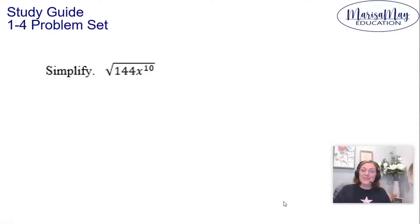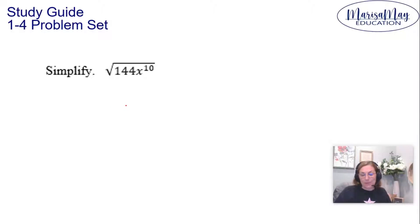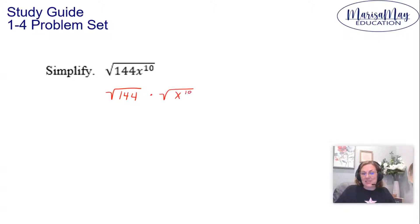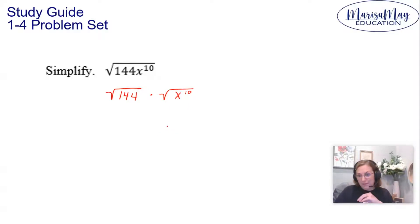Hi there. We're going to look to simplify this expression: the square root of 144x to the 10th. We're going to break this into two parts. I'm going to do the square root of 144, and then multiply times the square root of x to the 10th. We'll deal with the numbers separate from the variables.